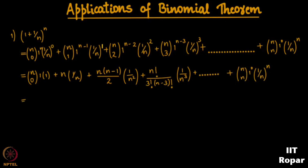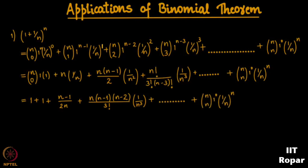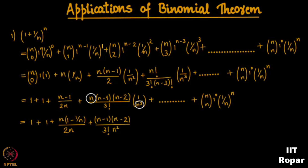This becomes 1 + 1 (the n's cancel in the second term), plus — cancelling one n from numerator and denominator — (n−1)/(2n), plus simplifying the next term gives n(n−1)(n−2) / (3! · n³), and so on.